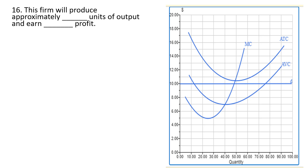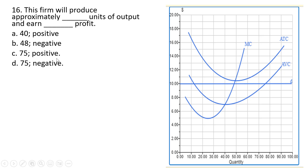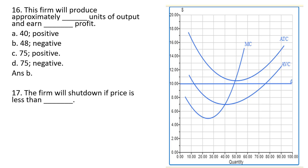Question 18: this firm will produce approximately blank units of output and earn blank profit. The firm produces where marginal cost intersects demand, slightly less than 50 units. Profit is negative because the average total cost curve lies above the price line. Answer choice B. Question 19: this firm will shut down if price is less than the minimum point on the average variable cost curve, which looks to be at $7. Answer choice D.